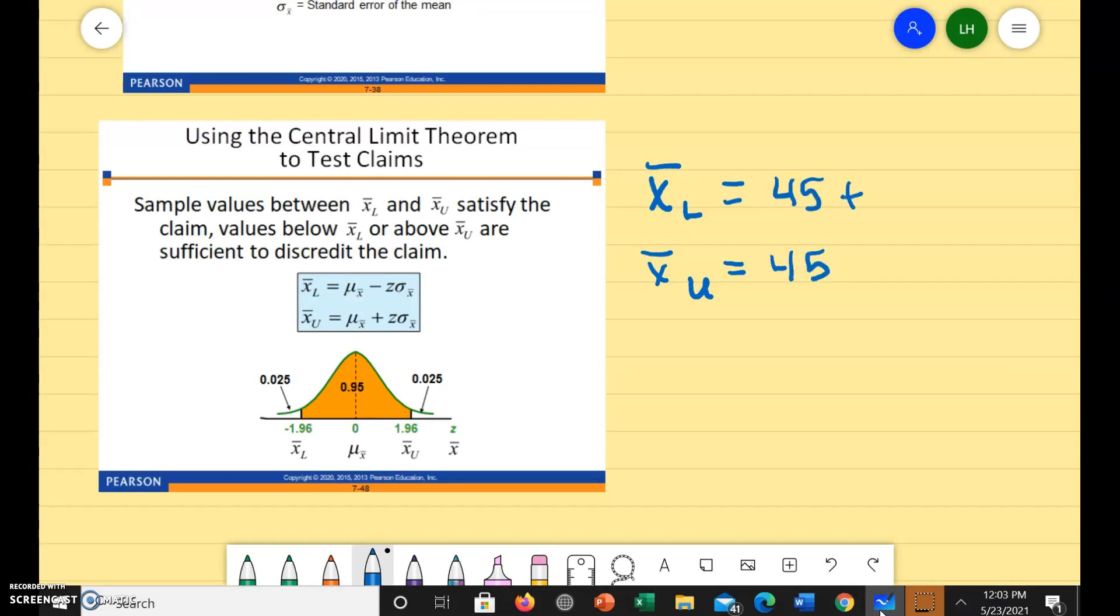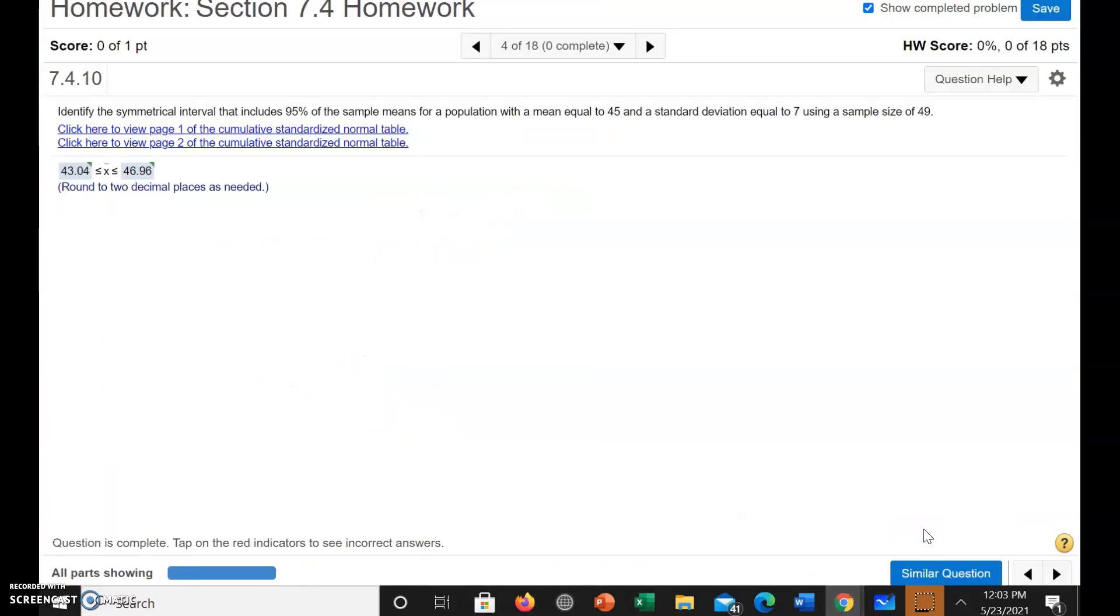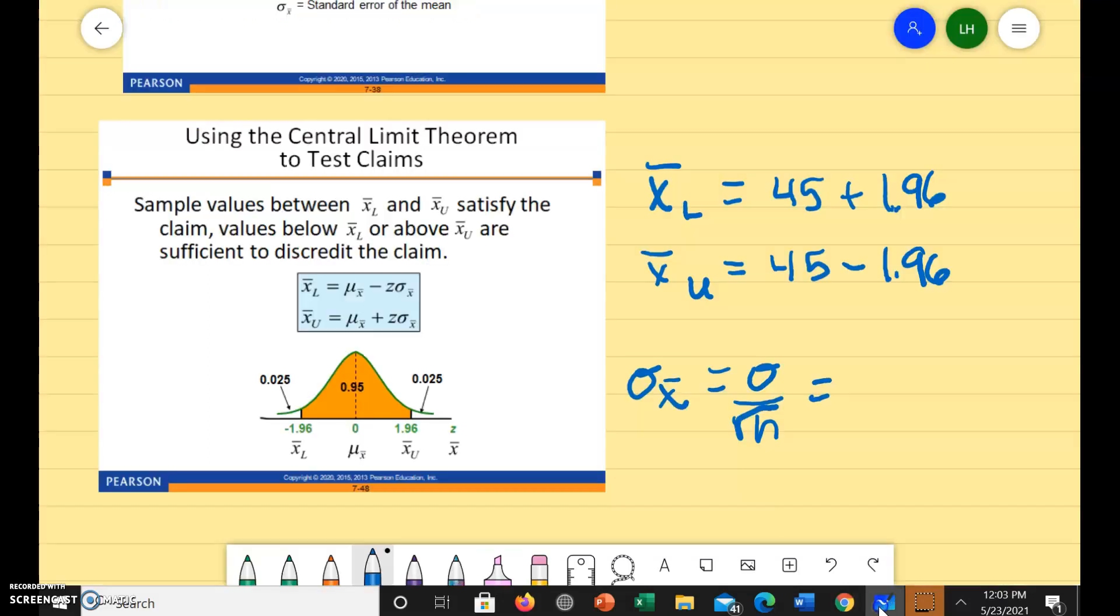And we're going to do plus and minus z, which we know to be 1.96 and negative 1.96. And then we have to find the standard error of the mean. Remember standard deviation divided by the square root of n. Our standard deviation here is 7 and n is 49. So 7 divided by the square root of 49.